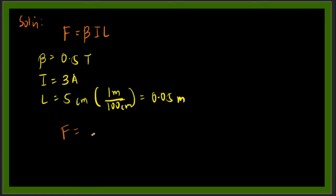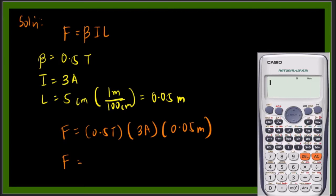Now substituting this into the formula, we have F equals 0.5 Tesla times 3 amperes times 0.05 meters. Now we'll use our calculator to solve for the force. We have 0.5 times 3 times 0.05.